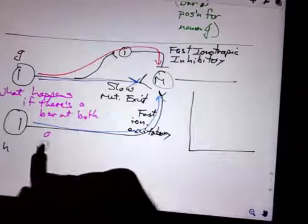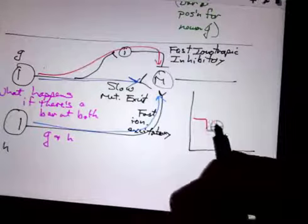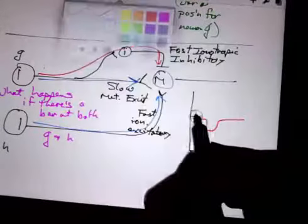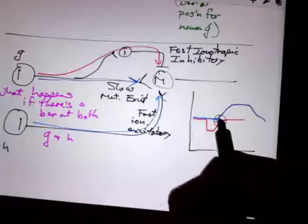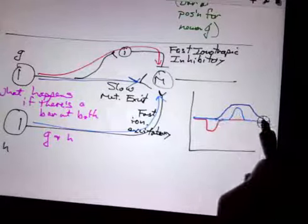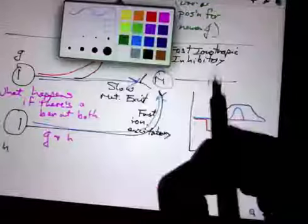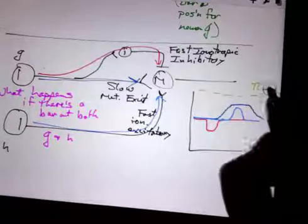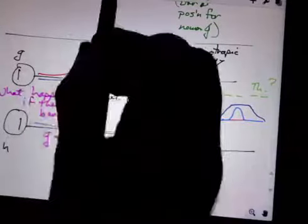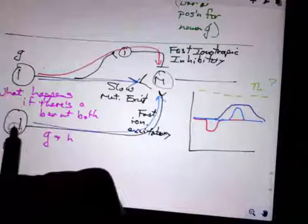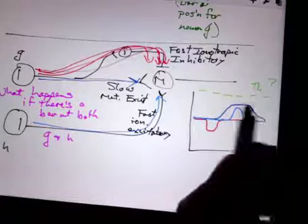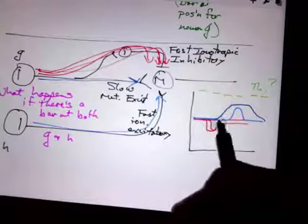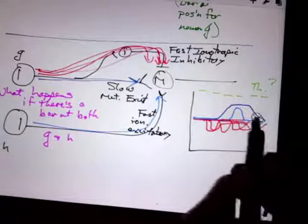So what happens if there's a bar at both G and H at the same time? We'll get our initial inhibition of course. We'll get our delayed excitatory signal from G and we'll also get the excitatory signal with a delay from H. But if that signal, if that bar stays at G, we're going to get repeated input. That bar is still there so we get inhibitory signal after inhibitory signal after inhibitory signal.